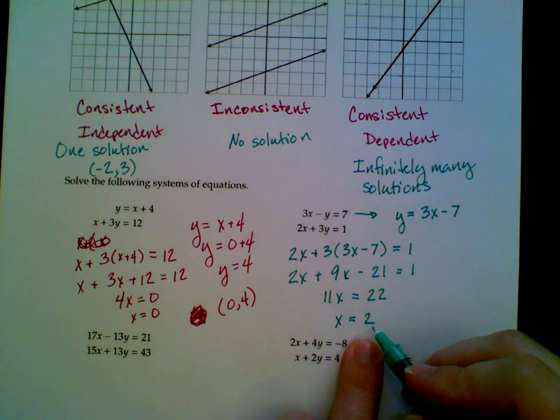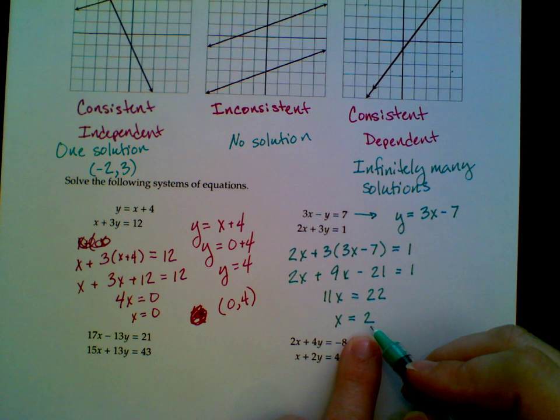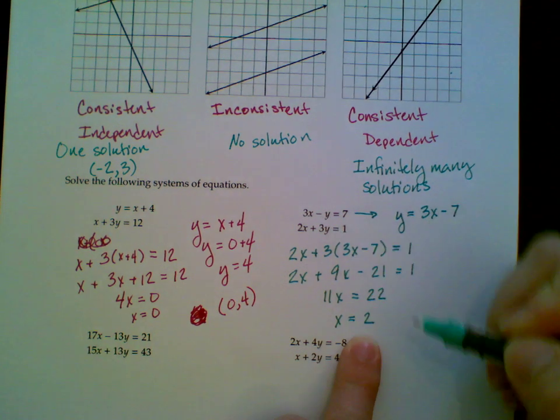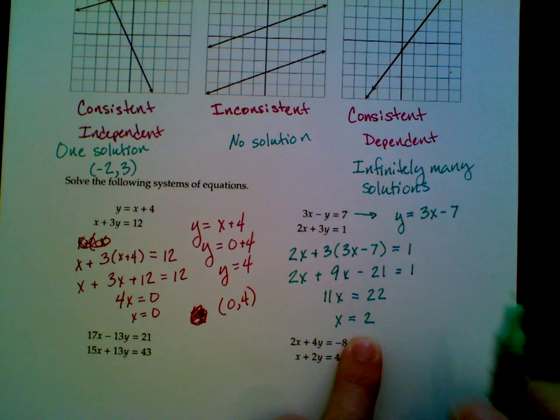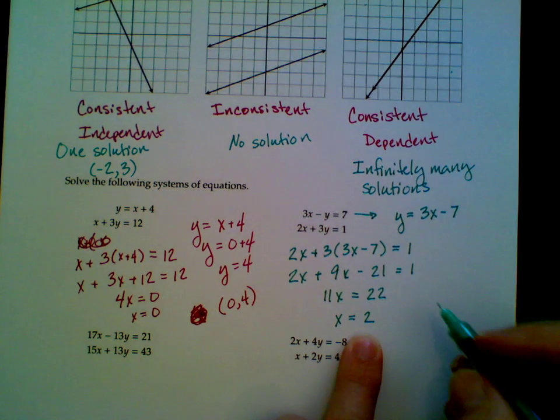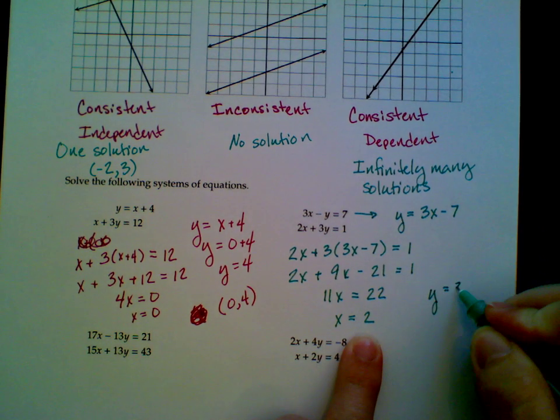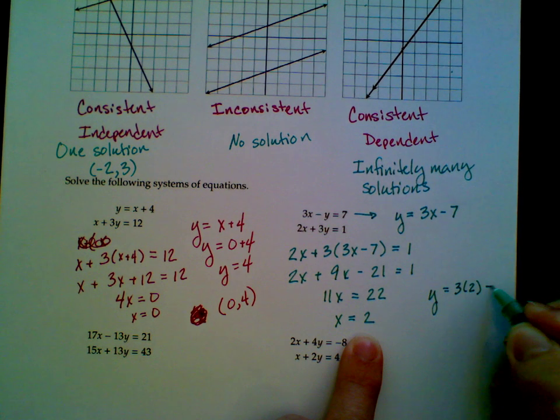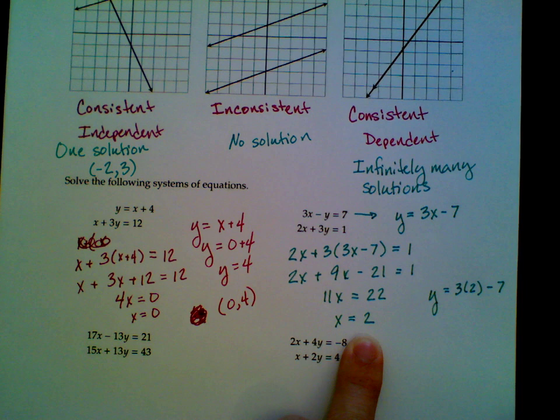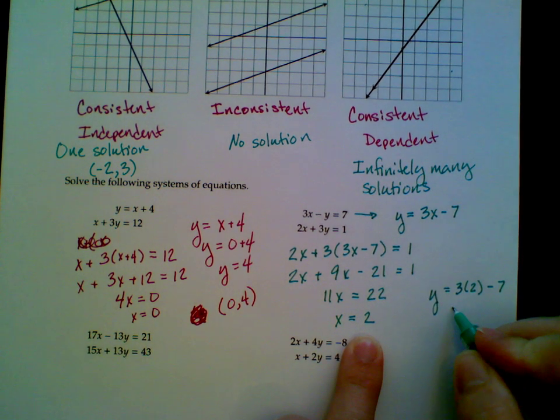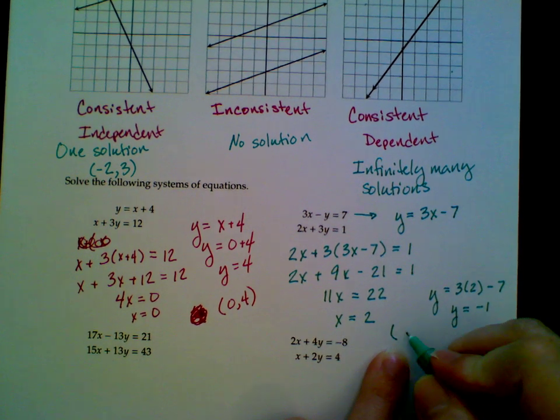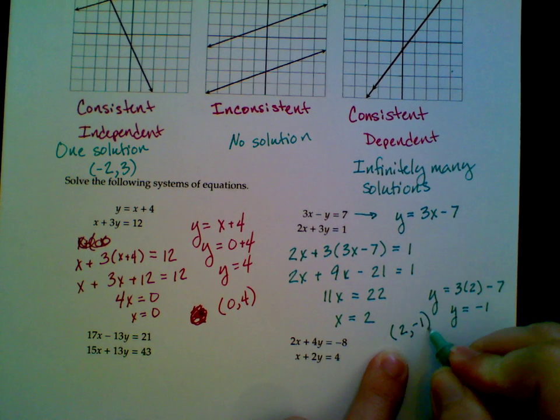So now I still need to find out my value of y. I can use either equation to figure out what y is, or I can use the rewritten form of the first equation. That one is actually what's going to be the simplest to do. So y equals 3 times 2 minus 7. That's 6 minus 7. So that is negative 1. So the solution is the point 2 comma negative 1.